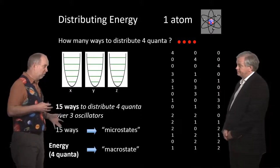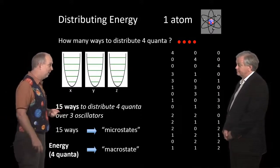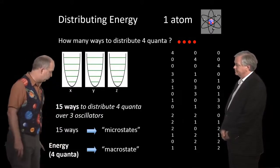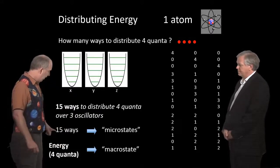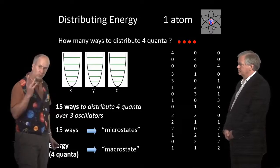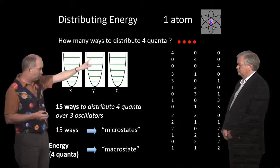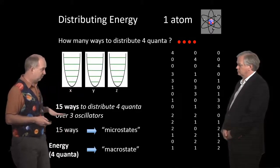Now in the subject called statistical thermodynamics, the total amount of energy, which in this case is four quanta, is called the macrostate. And the microstates are the different ways you can distribute those quanta. So in this case, these are the microstates. We have one macrostate, four quanta, and in this case, 15 microstates.